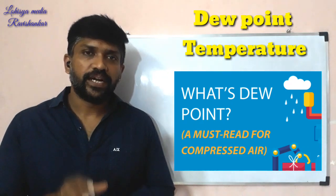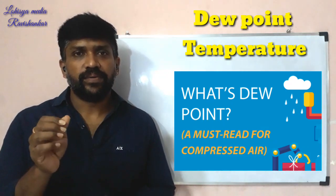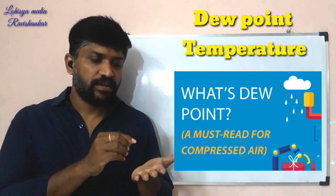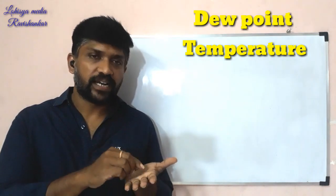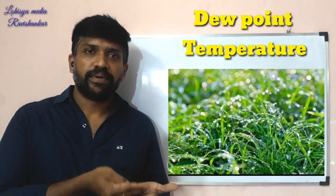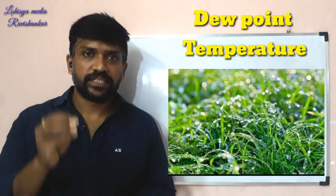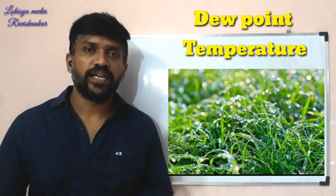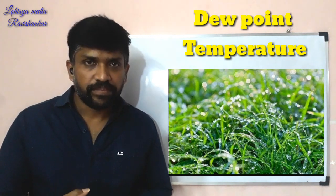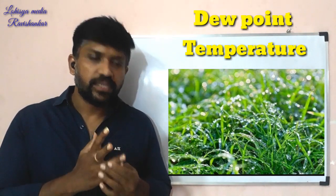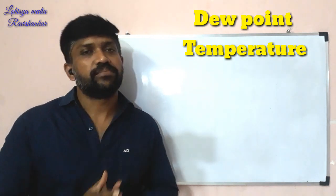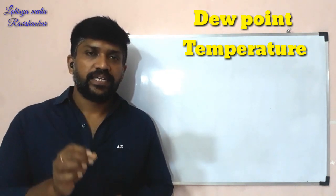Dew point — dew is condensate dew. In the early morning time, you can see a lot of water droplets. Why do you see that? Because the wet bulb temperature and dry bulb temperature are equal. When wet bulb temperature and dry bulb temperature are equal, that is the dew point temperature — that is the equal temperature.